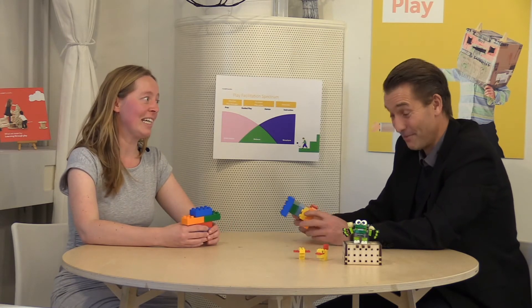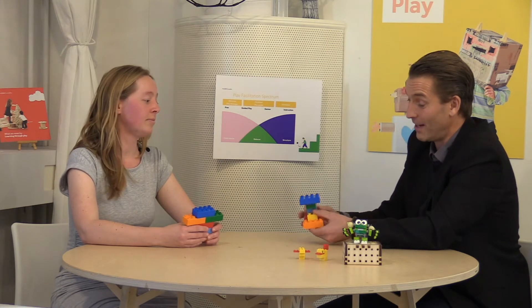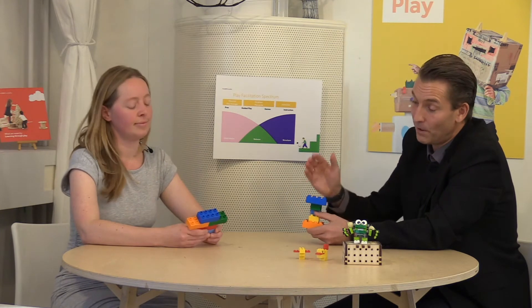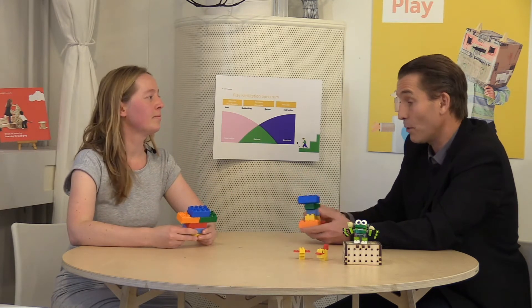Now Pia, we've already cheated a bit and done an activity. We did, we played! What we did was that I asked Hanne if she could build an animal from her childhood and she did, and so did I.